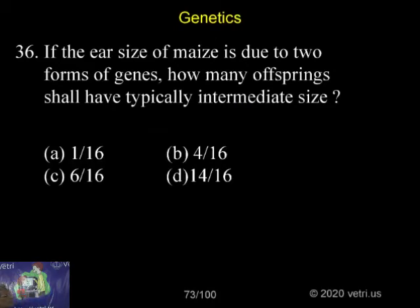The ear size of the maize is due to two forms of a gene. How many offsprings shall have typically intermediate size?